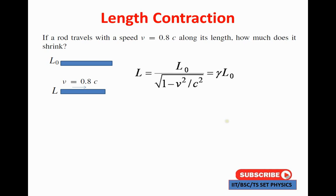The general formula for length contraction is L equal to L-naught divided by the square root of (1 minus v-squared by c-squared). The factor 1 over the square root of (1 minus v²/c²) is replaced with gamma, so L equal to gamma into L-naught, which equals (1 minus v²/c²) to the power 1/2, multiplied by L-naught.